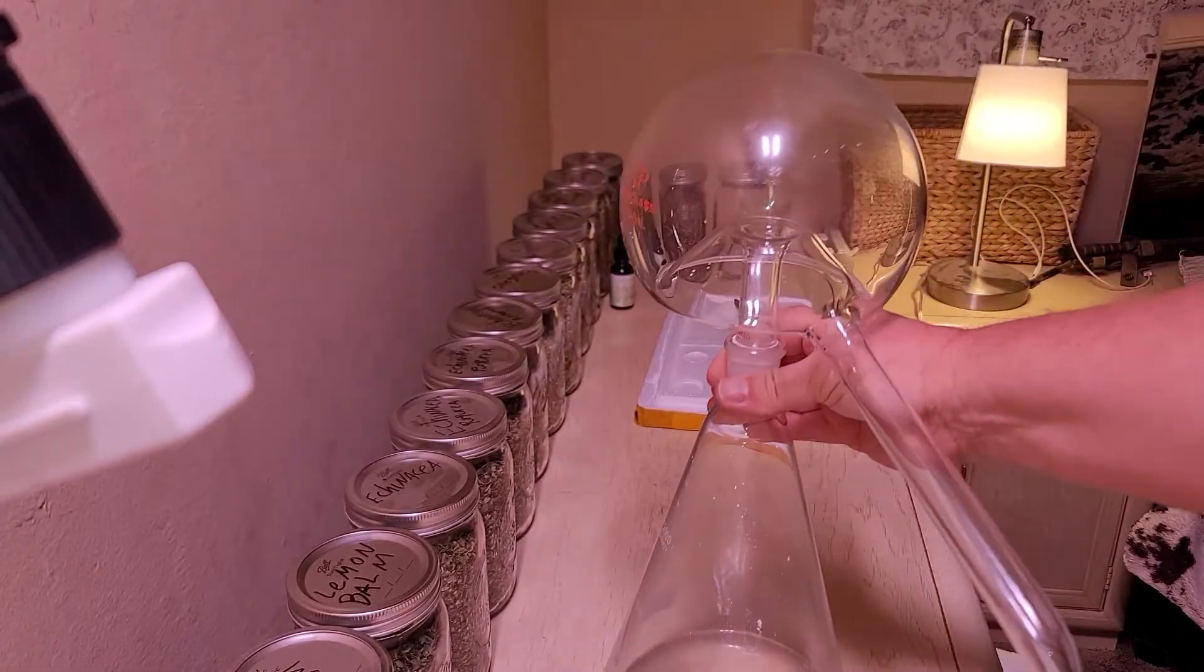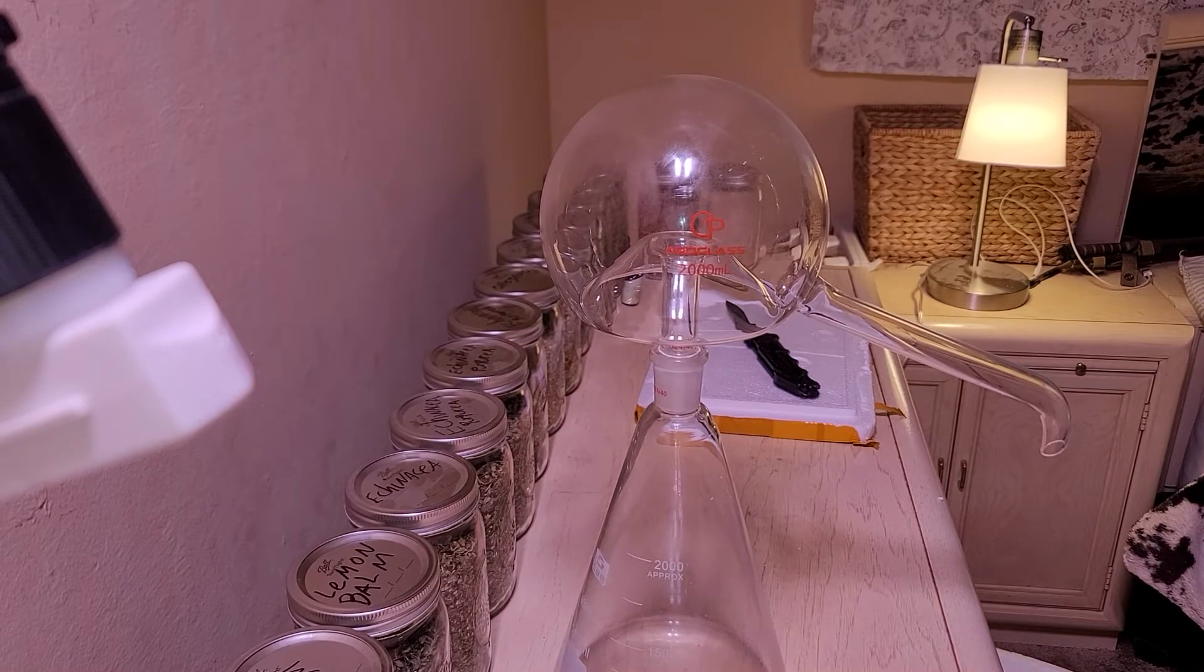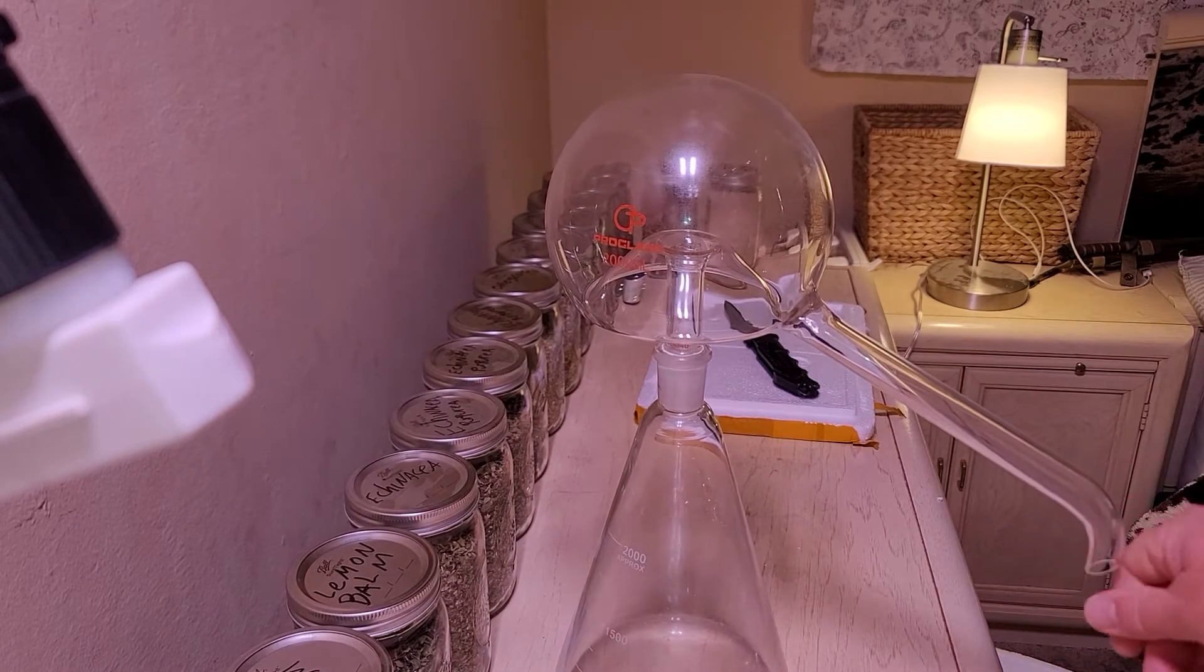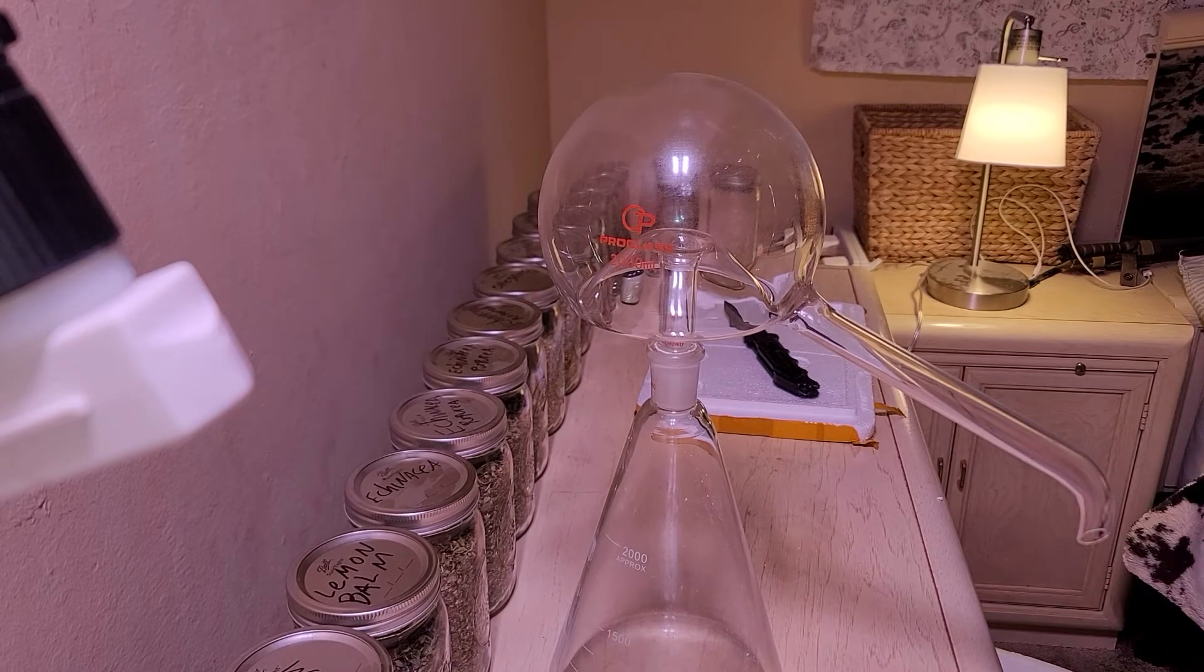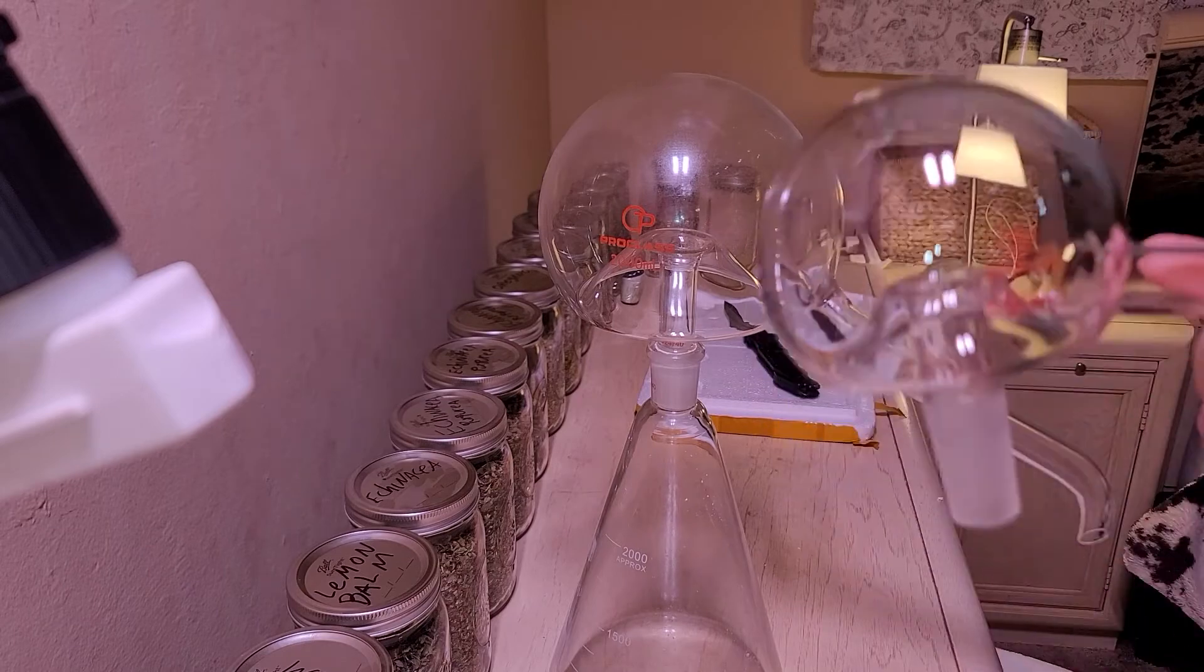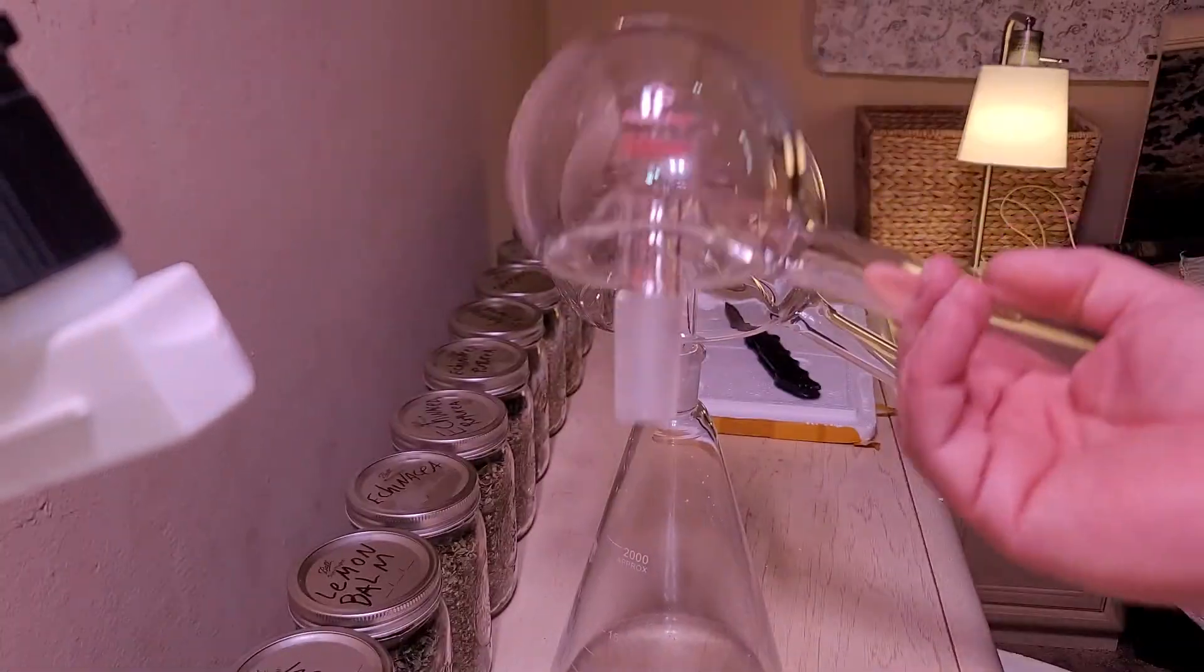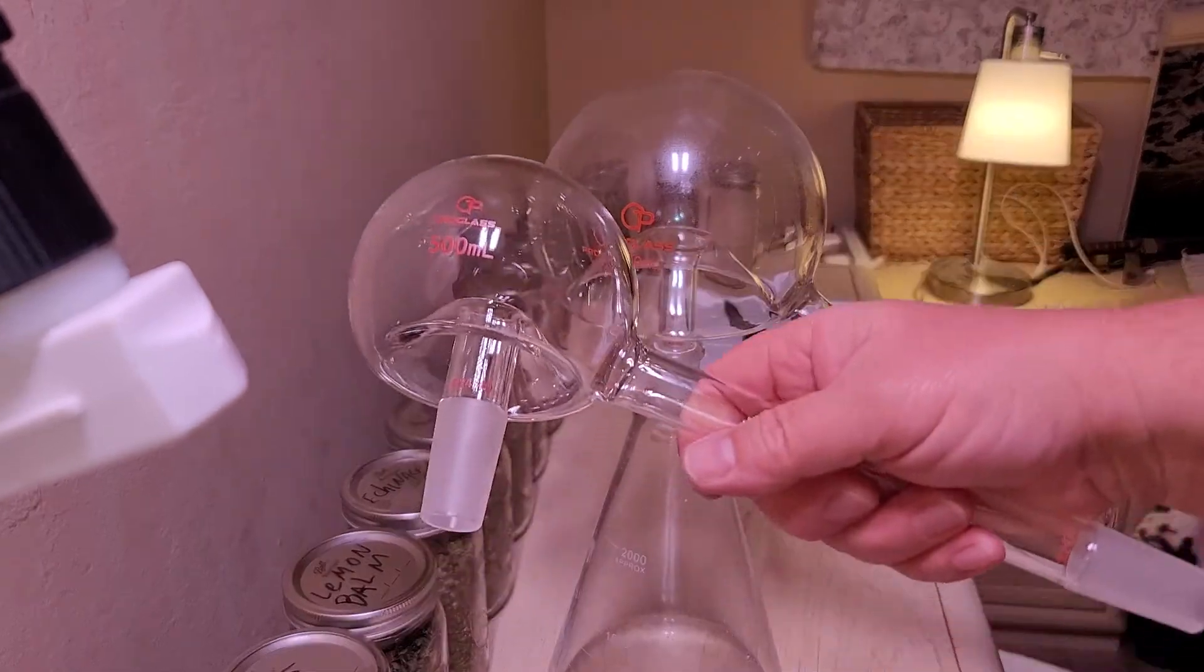This is important because when you're distilling something in an alembic or in a retort, it needs to have an air gap somewhere. It cannot be a completely sealed system because then when you add heat you get pressure, which causes problems. The glass could break or come apart. But this one has the ground glass joint on the end.